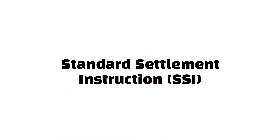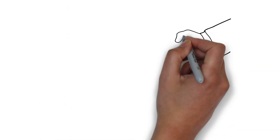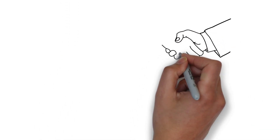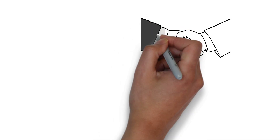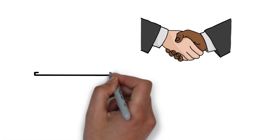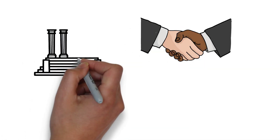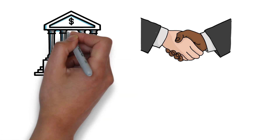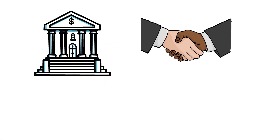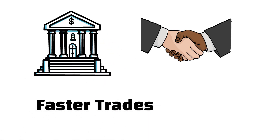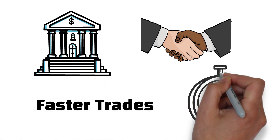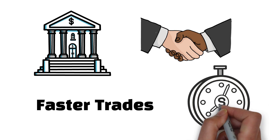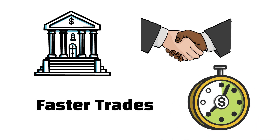What is standard settlement instruction? Standard settlement instructions are the agreements between two financial institutions which fix the receiving agents of each counterparty in ordinary trades of some type. These agreements allow traders to make faster trades since the time used to settle the receiving agents is conserved.